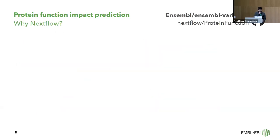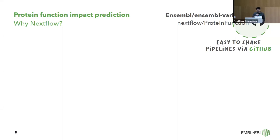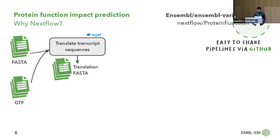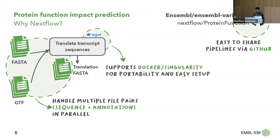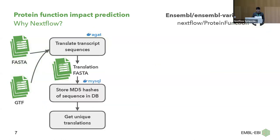While redesigning the pipeline, we wanted to go with Nextflow, mainly because it allows us to share our pipeline easily via GitHub, which is currently open source. It also allows us to handle multiple FASTA and GTF files — so multiple sequence and annotation files for different assemblies — to translate the transcript sequences. It's beneficial to do this in parallel given the sheer number of files. Another advantage is Nextflow's built-in support for Docker and Singularity, which allows us to run on multiple types of machines.